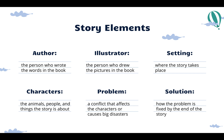Let's think about the story elements of a book. The author is the person who wrote the words in the book. The illustrator is the person who drew the pictures in the book. The setting is where the story takes place. Characters are the animals, people, and things that the story is all about. The problem is a conflict that affects the characters or causes big disasters. And the solution is how the problem is fixed by the end of the story.